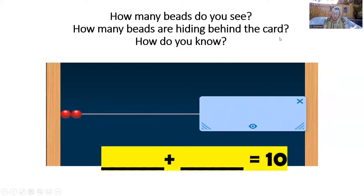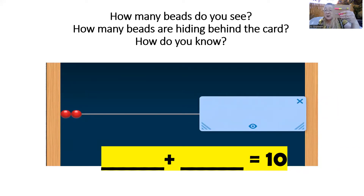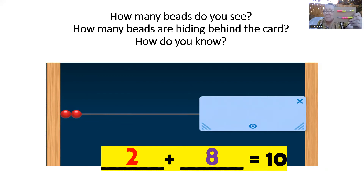How many beads are there now? Two. You got it — that was easy, wasn't it? Two beads. I see two. How many beads are hiding behind the card? How do you know? Did you count? Did you just know it? Did you see them on your number rack? So good. Let's write that equation out and read it together: two plus eight equals 10. Good job.